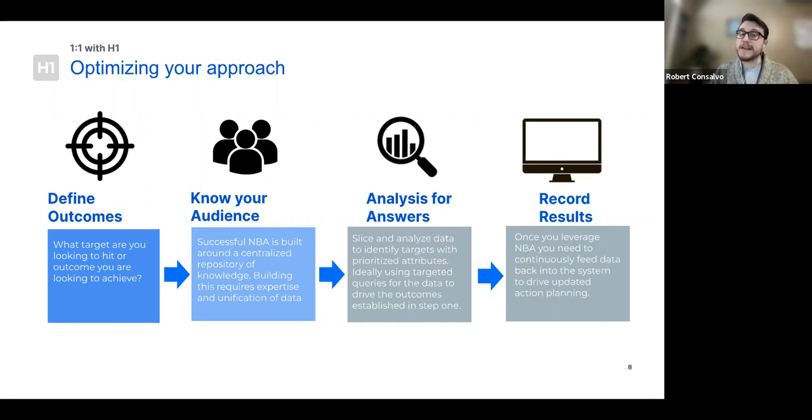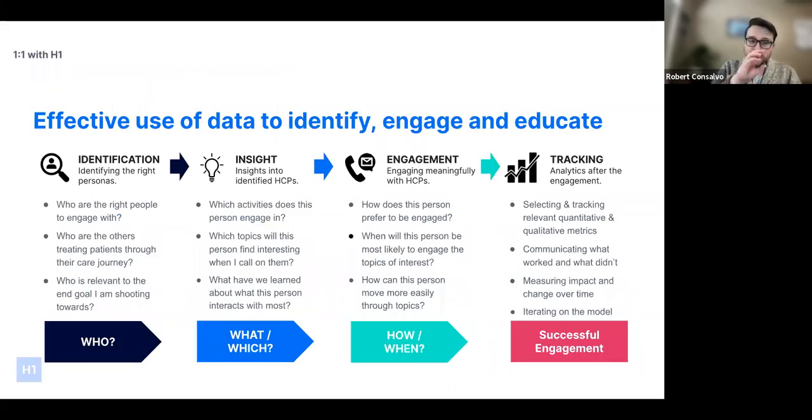Then you have to know the audience. That's where collecting all of that data, building that unification, building out all of those different disparate data sources and unifying them together becomes critical. The next piece of this is going to be analyzing that information. If you know what target you're aiming for and you know who is basically going to help you reach that target, you're going to want to start building out those queries to drive the outcomes established in step one. And this is really critical: you're going to want to use those interactions to drive the next piece as well.